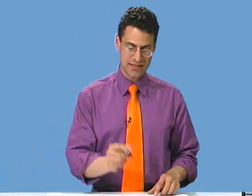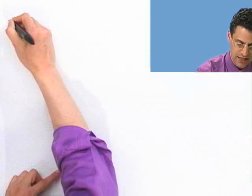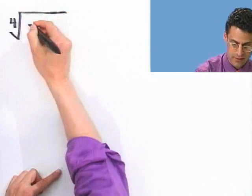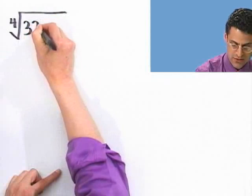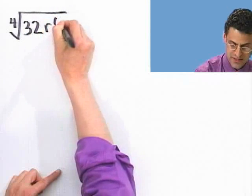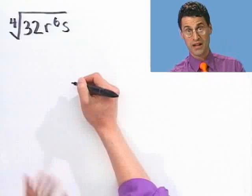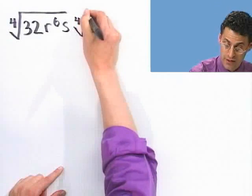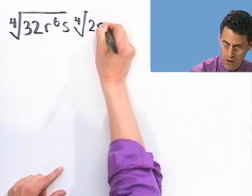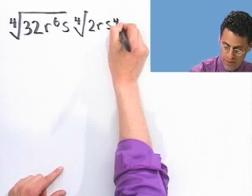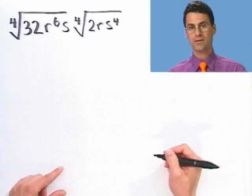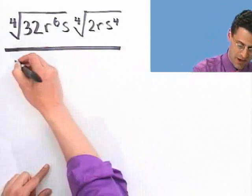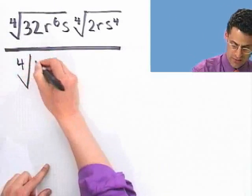Now if you thought that was something, wait till you see this next one. Let's take the fourth root of 32 r to the sixth times s, multiplied by the fourth root of 2r times s to the fourth power.